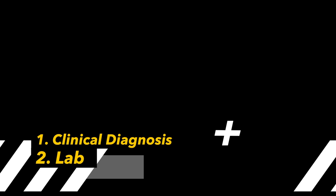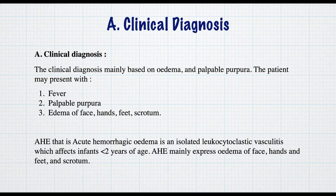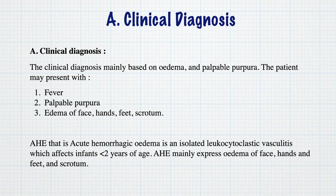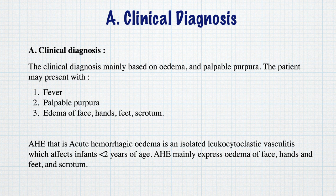Now let's learn how to diagnose HSP. This can be diagnosed by clinical diagnosis and lab diagnosis. Clinical diagnosis is mainly based on edema and palpable purpura. The patient may present with fever, palpable purpura, and edema of face, hands, feet, and scrotum. AHE — that is acute hemorrhagic edema — is an isolated leukocytoclastic vasculitis which affects infants.